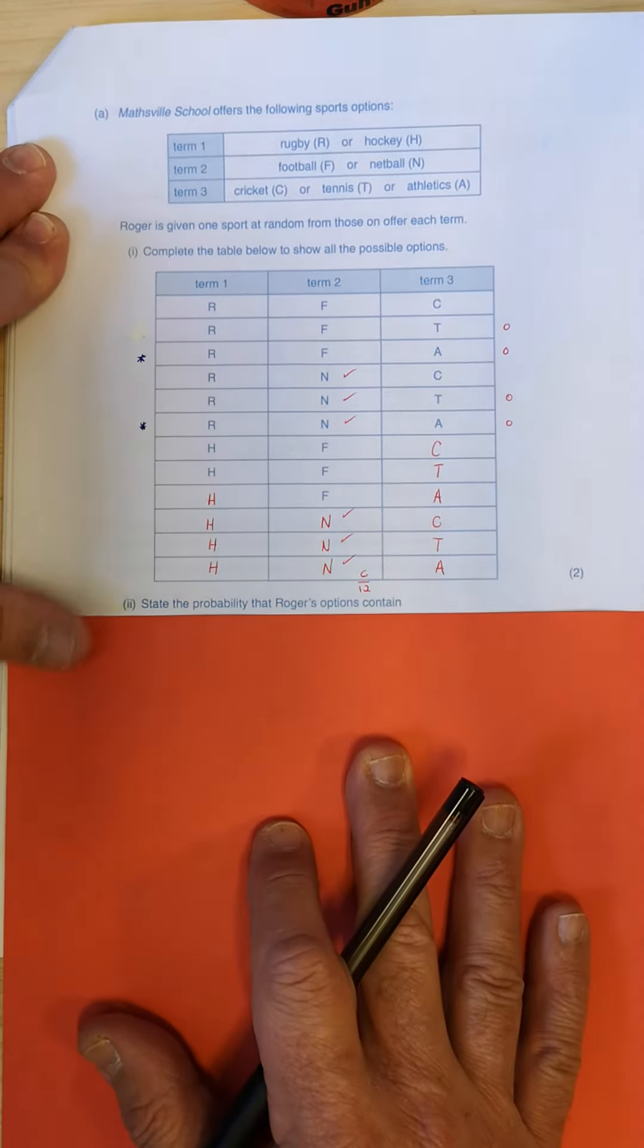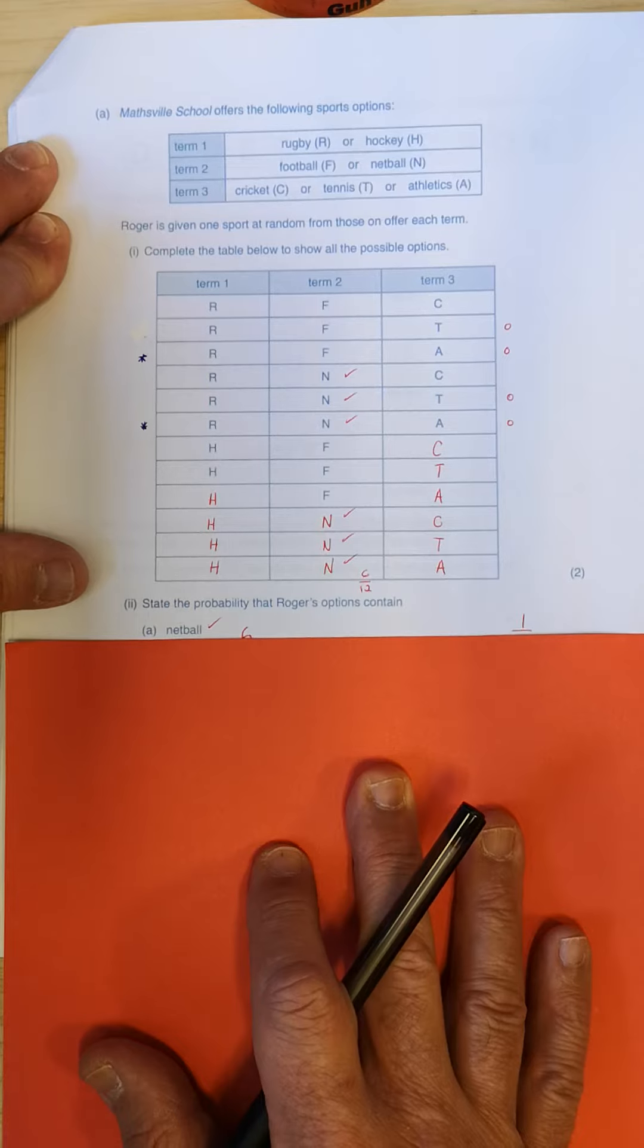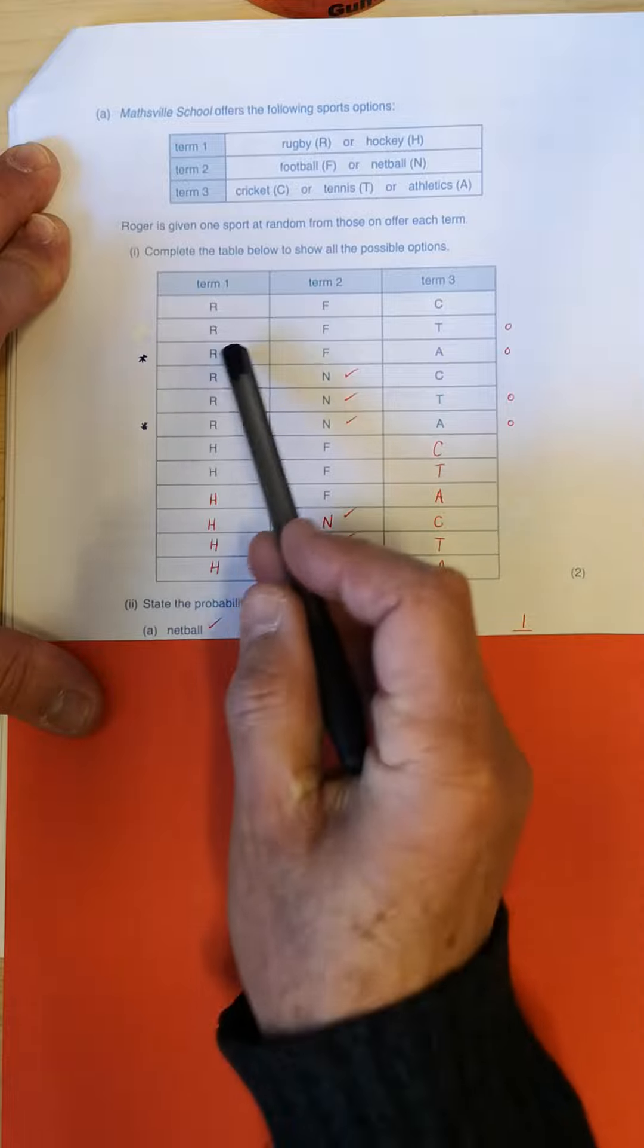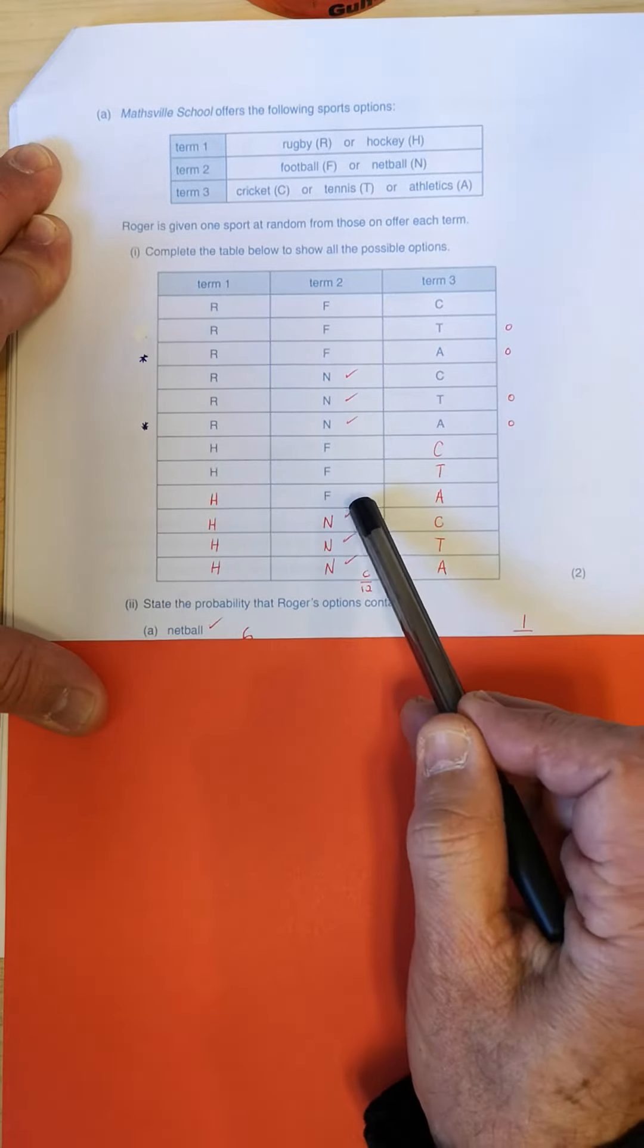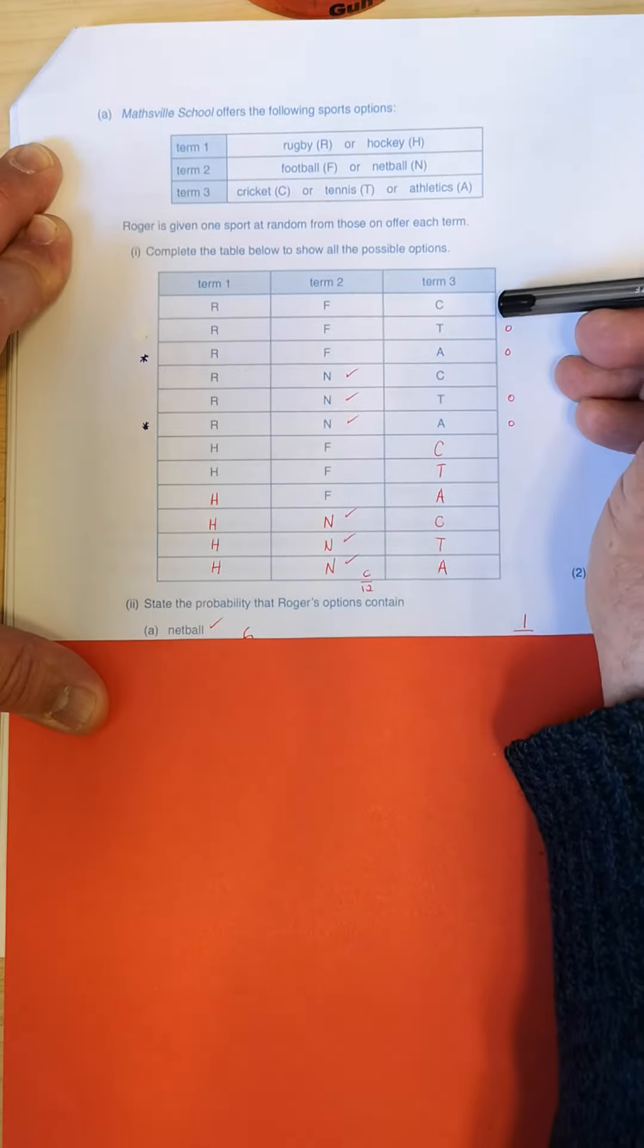Then, state the probability that Roger's options contain netball. Okay, so his options contain netball. Well, where are the ends? One, two, three, four, five, six. How many options? How many outcomes?